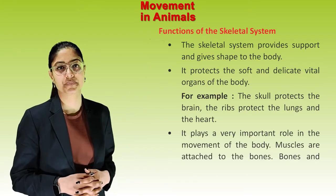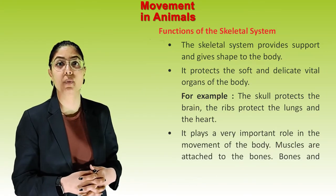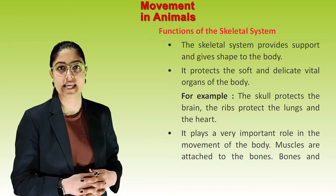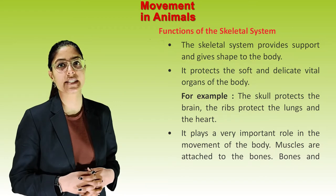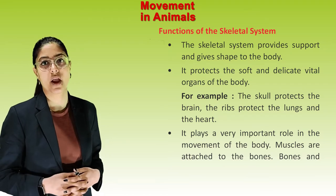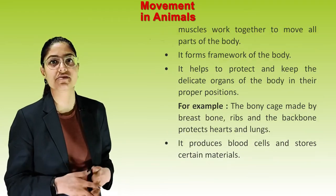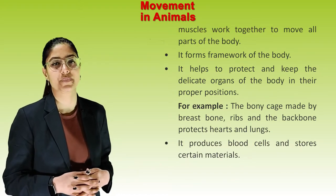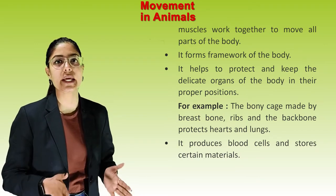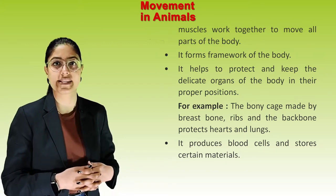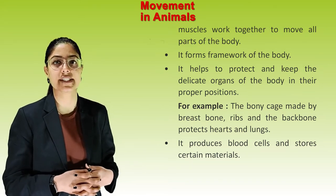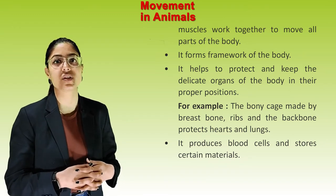Functions of the skeleton system. The skeleton system provides support and gives shape to the body. It protects the soft and delicate vital organs — for example, the skull protects the brain, and the ribs protect the lungs and heart. It plays a very important role in the movement of the body, as muscles are attached to bones and work together with them. It forms the framework of the body and keeps delicate organs in their proper position. It also produces blood cells and stores certain materials.